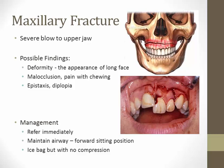Maxillary fracture results from a severe blow to the upper jaw — not very common, but it can happen. Deformity is a possibility; if the patient sustains a long transverse fracture, gravity may pull on the unstable bone and their face may look a little longer than usual. Malocclusion, pain with chewing, and difficulty talking are expected. Epistaxis and diplopia are also possible. As with the others, refer immediately and think about airway maintenance — sitting straight up and leaning slightly forward. Apply ice pack but with no compression.